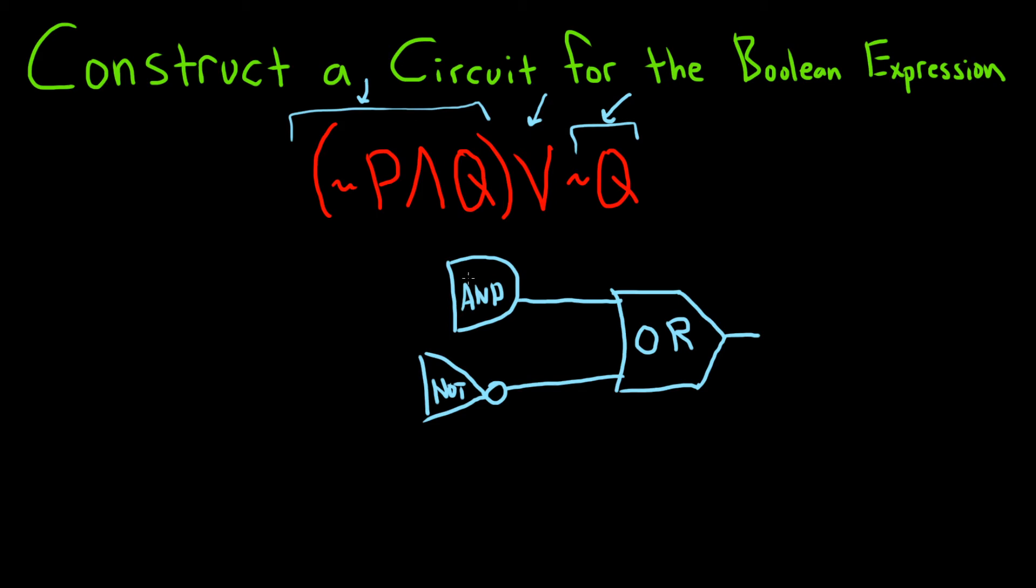So what is going into the AND gate? Well, two things are going into the AND gate: NOT P and also Q. That means we need a NOT gate. So I'm going to go ahead and put another NOT gate here.